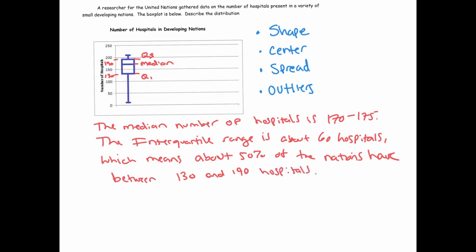At this point I've talked about the center using the median, which is the only thing we have. You can't get the mean from a box plot. I've indicated the spread using the interquartile range, which is a good way of describing the spread.